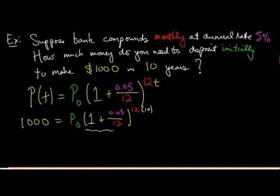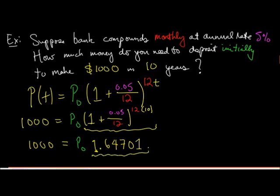Now, this whole thing, that's just another number. You could plug that into your calculator. Make sure you do it in the right order and you put the parentheses in the right place. If you do that, you should get 1.64701. All right, notice it's kind of close to the number from the previous problem, but not exactly because you see we're compounding monthly instead of continuously. This is equal to 1,000 and again, to solve for p0, you just take 1,000 and you divide by this number and you plug that into your calculator.